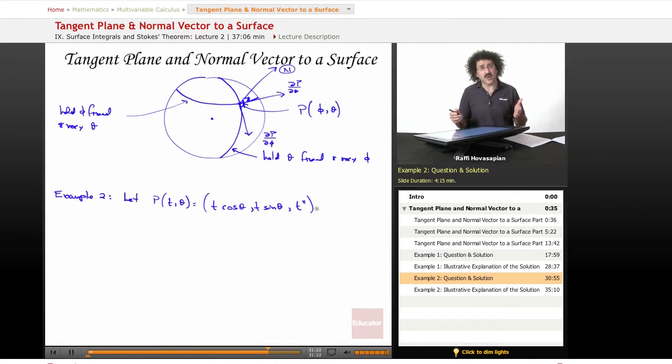This happens to be the parameterization for a paraboloid. And of course, t is going to be greater than or equal to zero, and theta is going to run greater than zero and less than two pi.